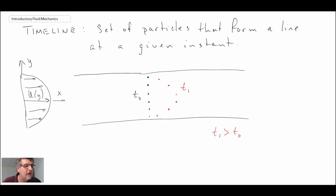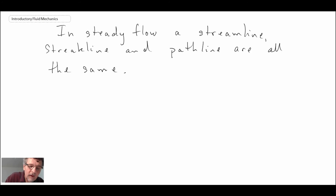Those are different methods by which we can visualize fluid flows. It turns out that in steady flow, if it is not changing with respect to time, so if you have steady flow, that would be a flow where D by DT of any term is equal to zero. If you have steady flow, streamline, streakline, and pathline are all the same.